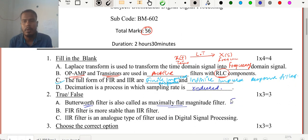Next, the FIR filter is more stable than IIR filter. This is true. I told you that FIR filter is more stable because it does not contain any poles, it contains only zeros. The C option question is saying the IIR filter is an analog type of filter used in digital signal processing. We know that IIR and FIR are two digital types of filters, so they are not analog. That is why this question is nothing but false.